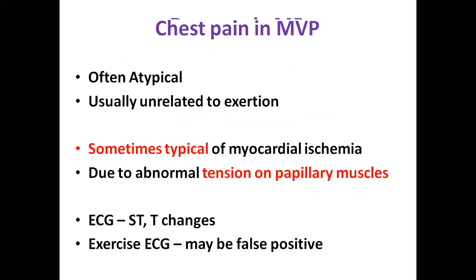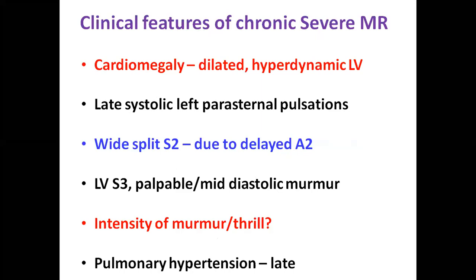Chest pain is not a common symptom in MR, but in mitral valve prolapse there may be atypical chest pain — sometimes difficult to differentiate from myocardial ischemia — due to abnormal tension on papillary muscles. Clinical features of chronic severe MR include cardiomegaly with a dilated hyperdynamic left ventricle, late systolic left parasternal pulsations, and wide split second sound due to early A2. LV S3 is sometimes palpable with a mid-diastolic rumble when severe MR is present. There is no correlation between intensity of murmur or presence of thrill and severity.